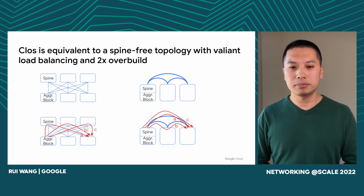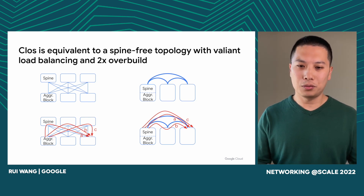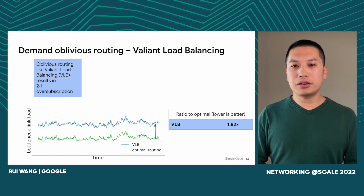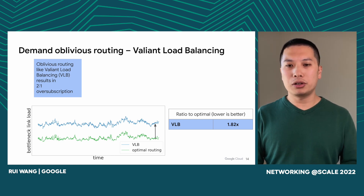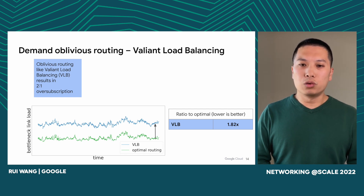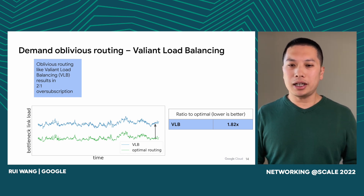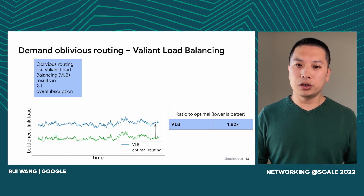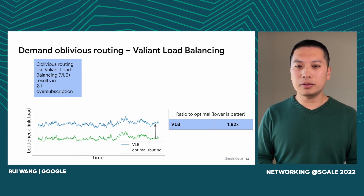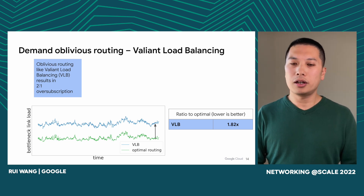So what's wrong with this? While the spines are physically removed, we're still paying the cost of the spine — it's just transferred to the aggregation block. Looking at bottleneck link load in a production fabric, we find that VLB is about 82% worse than optimal. VLB requires nearly 50% of the aggregation block's capacity reserved for transit, which only works for a subset of our fleet — many aggregation blocks run at utilization well beyond 50%, leaving no room for extra transit.